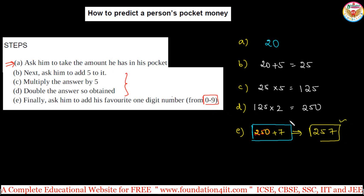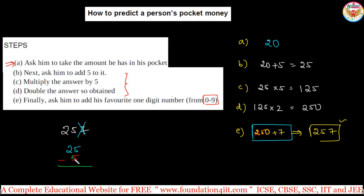He can add any number from 0 to 9 in the last step. When he tells you the final number — say 257 — without hesitation you can immediately say the original amount was 20. The technique is: whatever number they say, ignore the last digit. Then from the remaining number, subtract 5 in your mind, and that gives you the original pocket amount.